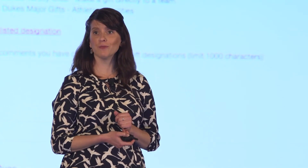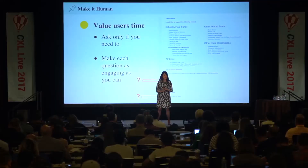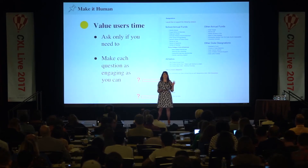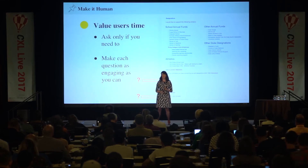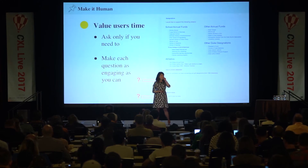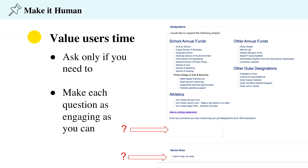We need to value our users' time — ask only if we need to, and make each question as engaging as you can. I consider this like if you're asking your friends to help you move, you always have to have pizza and beer. In this example, before I redesigned Duke's online giving form, they were previously asking these questions, and we learned that no, we don't need to. So we were able to take them out.